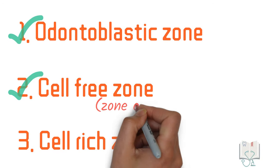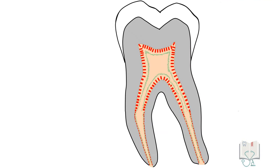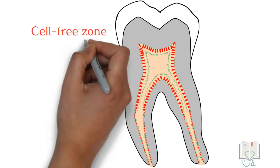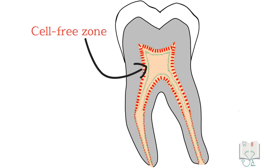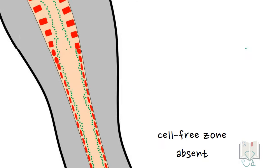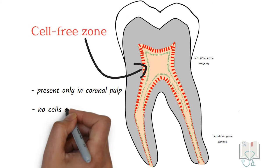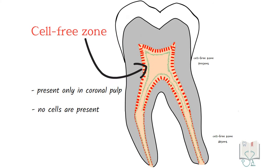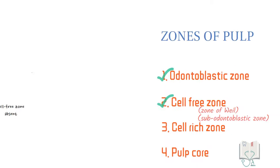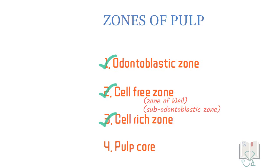The next zone is the cell-free zone, also called the zone of Weil or subodontoblastic zone. This zone lies just beneath the odontoblastic zone. It is seen only in coronal pulp and not in radicular pulp. As the name suggests, no cells are present in this zone.